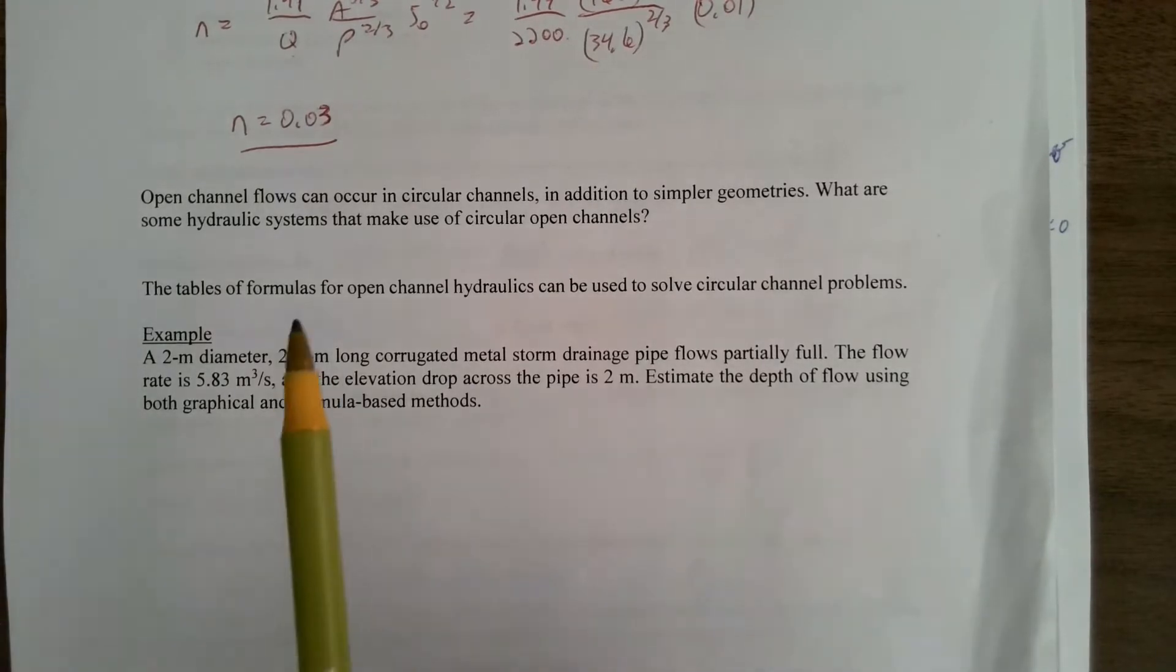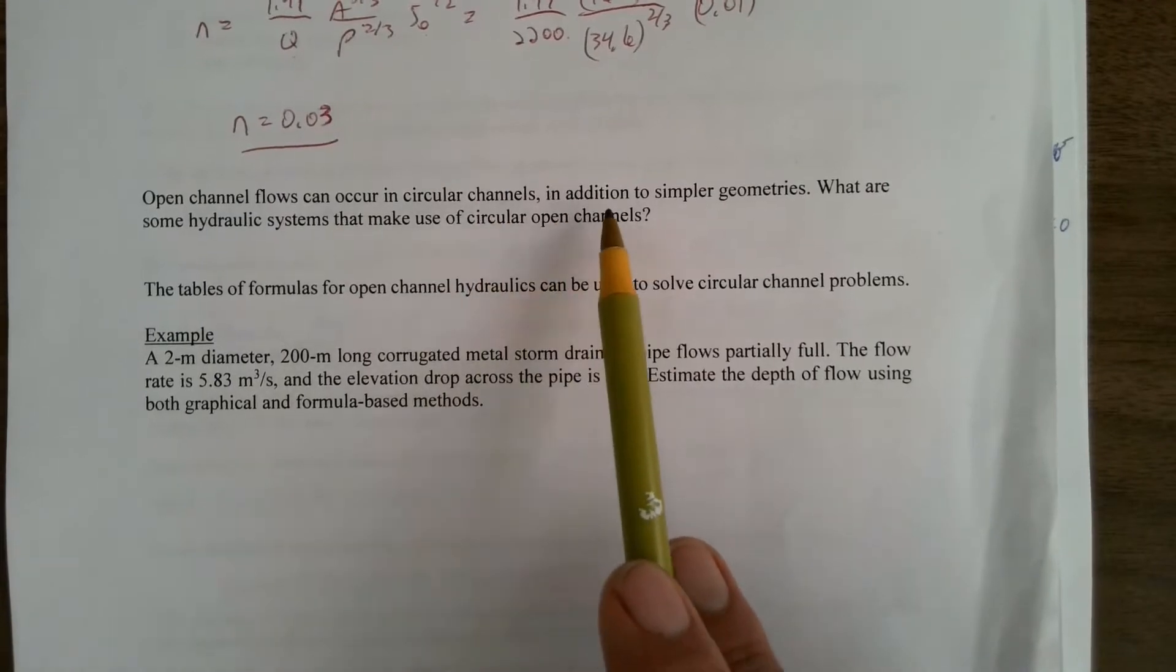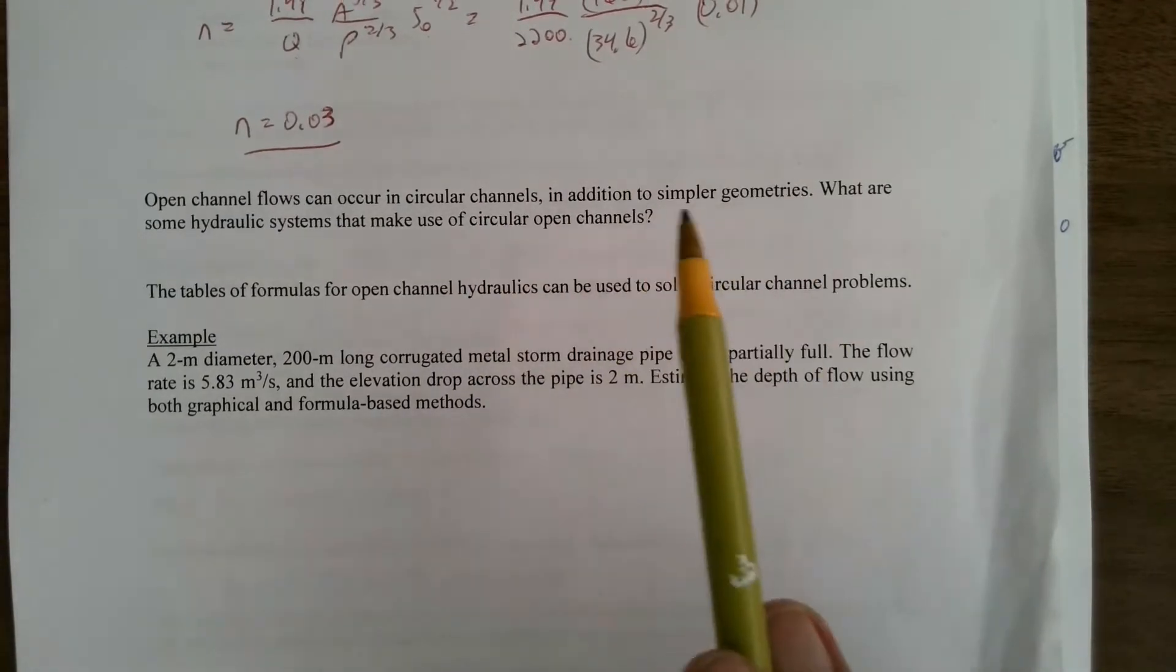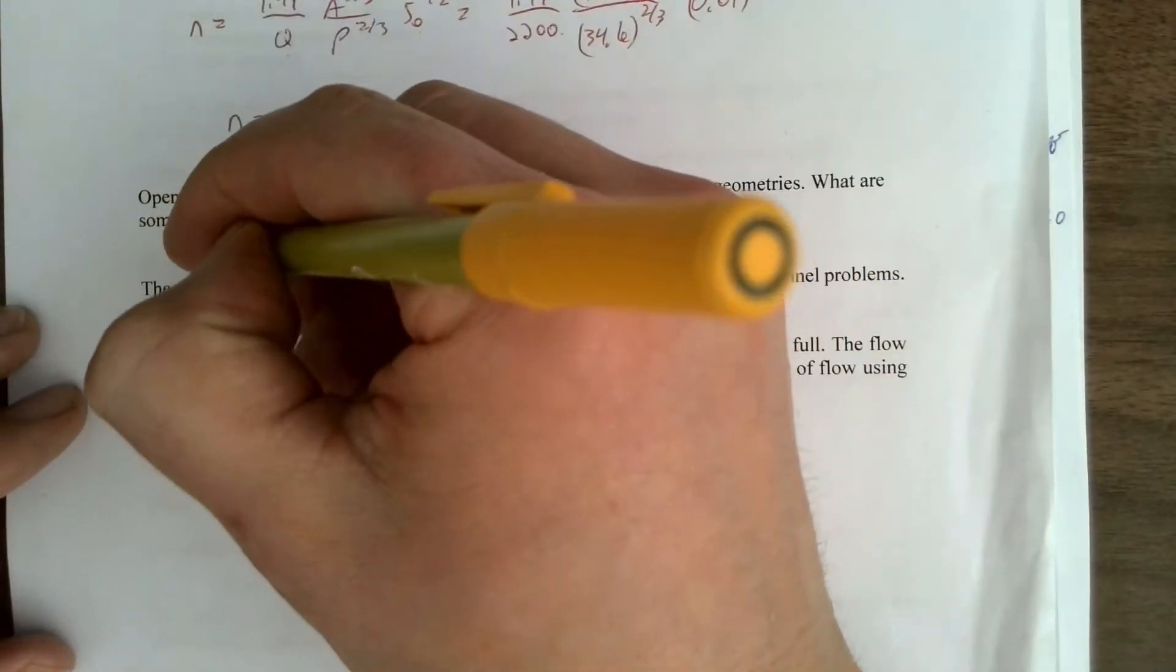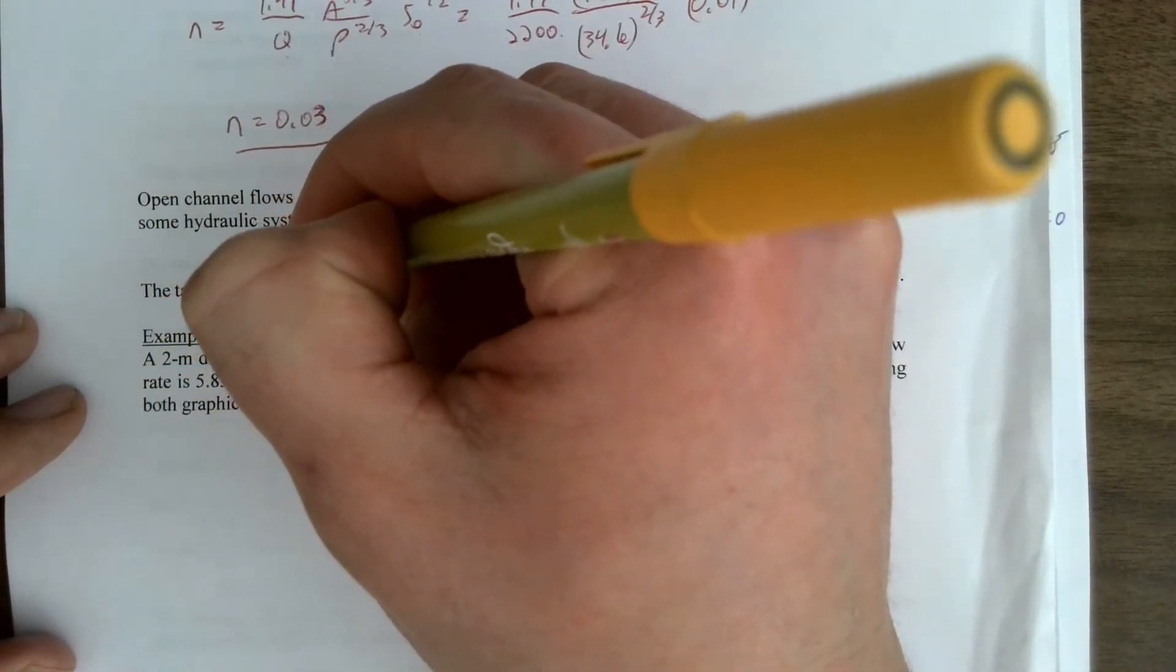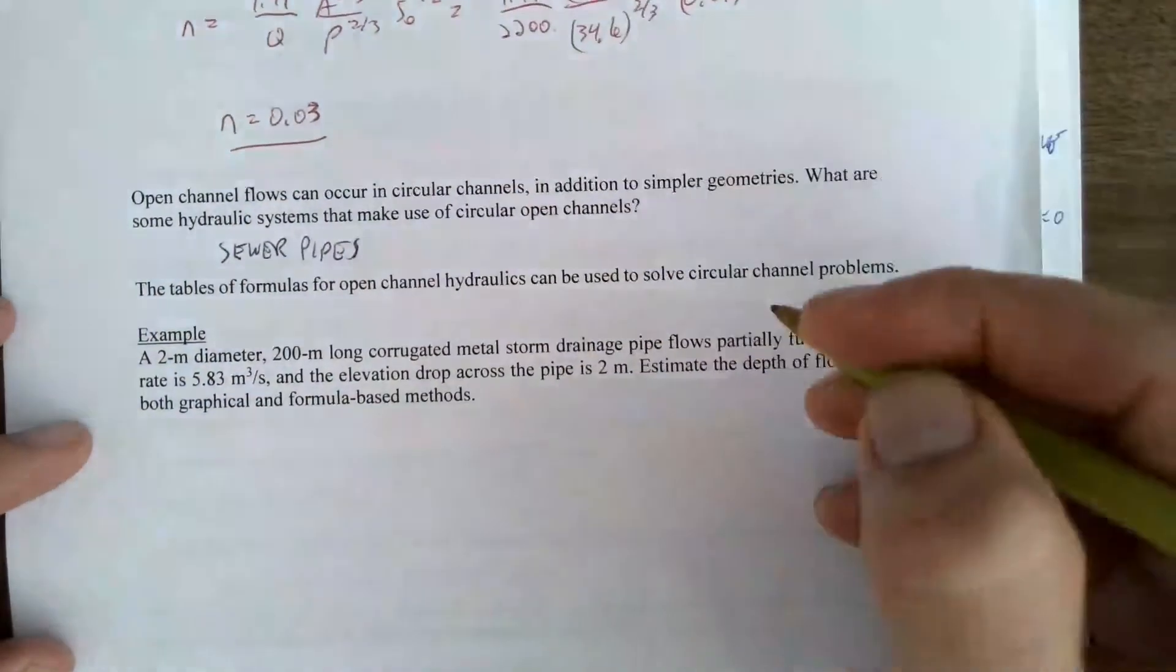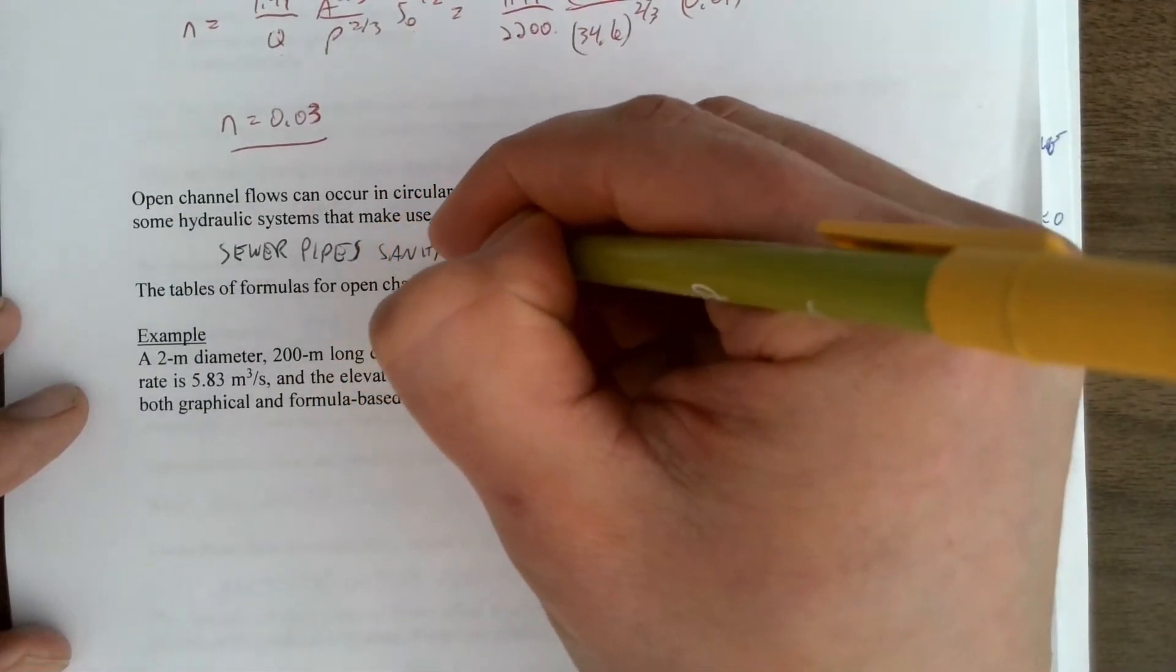Open channel flows often occur in circular materials, in addition to simpler shapes. So, what are some examples of hydraulic systems? A really key one here is going to be in sewer pipes, both sanitary sewers and in storm sewers. Storm drains.